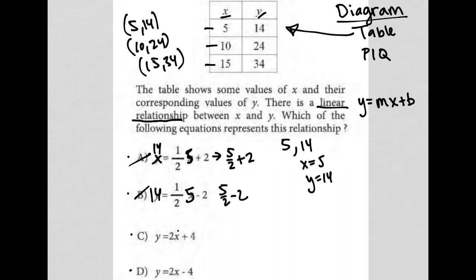Choice C, replace X with 5. Multiplying it. Replace Y with 14. Is it true that 14 equals, what's 2 times 5, is 10 plus 4? 14, in fact, does equal 10 plus 4. So I'm liking choice C.